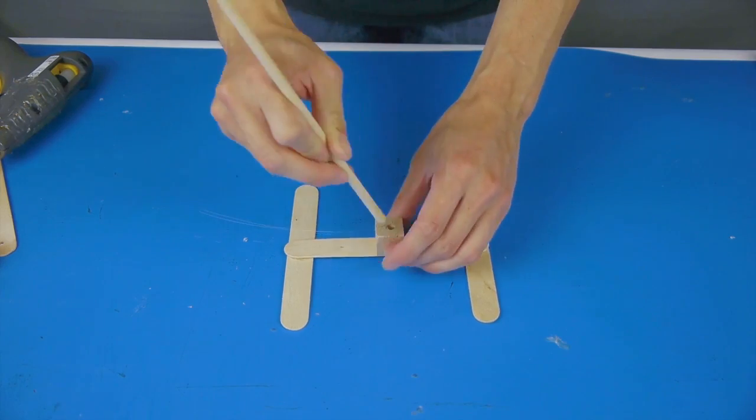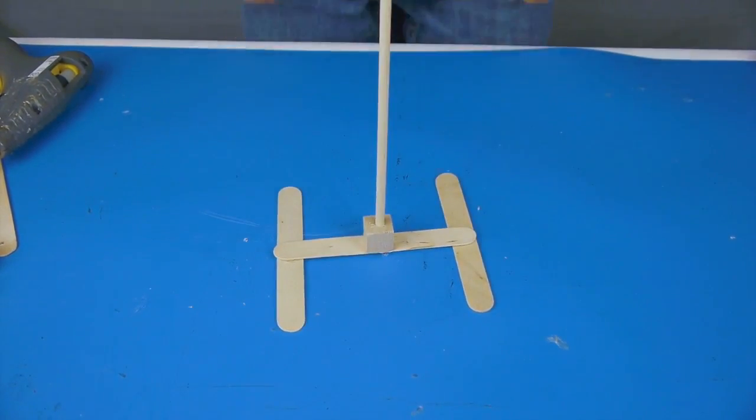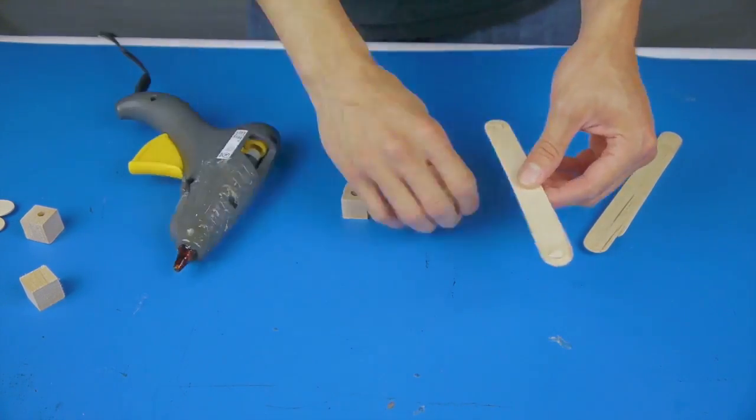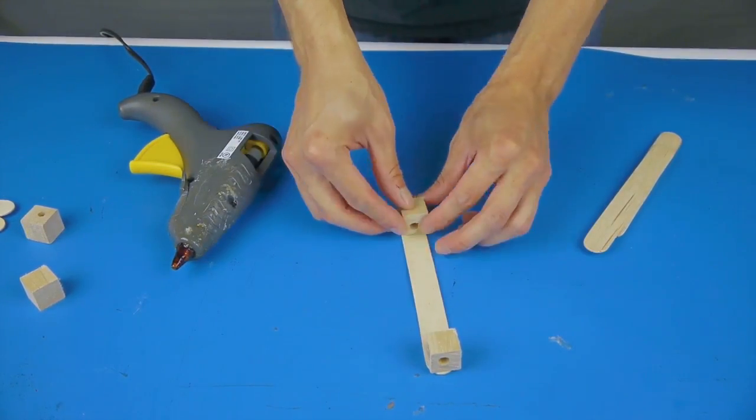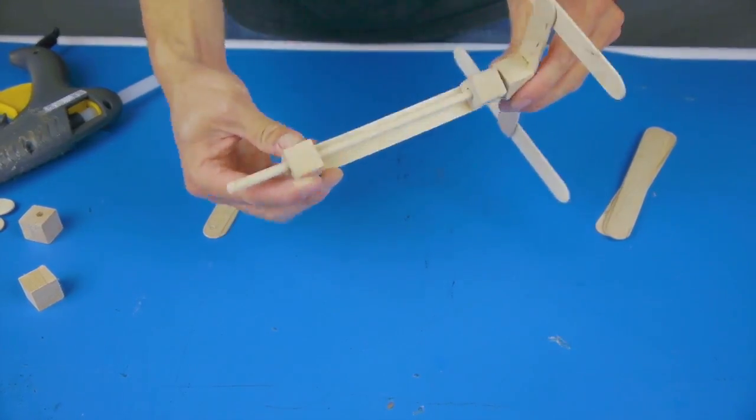The base starts with three craft sticks in an H shape, the cube and the dowel. Build the pivot column by gluing two cubes onto a craft stick, making sure that the holes are aligned. Stop here and make sure that it fits on the dowel and turns smoothly before continuing.